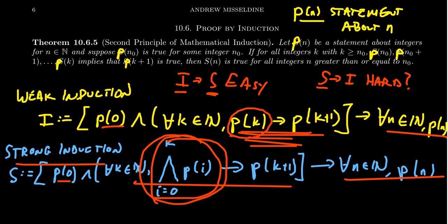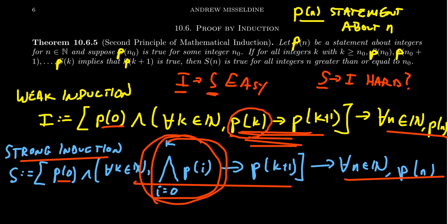It's never wrong to always use strong induction — you're just taking the most assumptions you can, even if you don't use them all. Some people shy away from it, but there's nothing logically wrong with it. By default, I write induction proofs using weak induction. If as I'm writing the proof I realize I want to use a non-immediate predecessor, I'll rewrite it in revision as a strong induction proof and go forward from there.